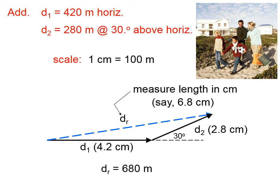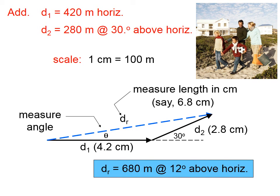And then, because a displacement is a vector and needs a direction, we also now have to give a direction. And the direction we're going to give must be measured back here where we started our drawing. So I'm going to measure this little angle right in here, which I'm going to call theta, and I'm going to find that to be about 12 degrees. So I'm going to report my answer as 680 meters at 12 degrees above horizontal.